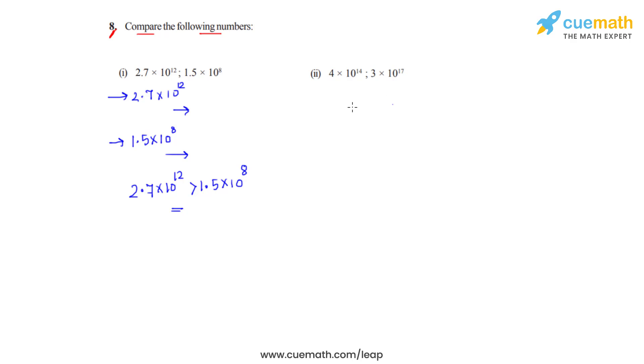By following the same logic in the second part, we see that the two numbers have been expressed in standard form. One is 4 times 10 raised to 14 and the other is 3 times 10 raised to 17.